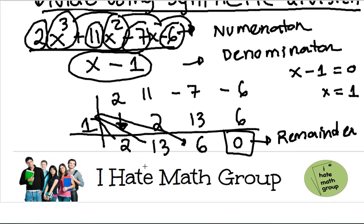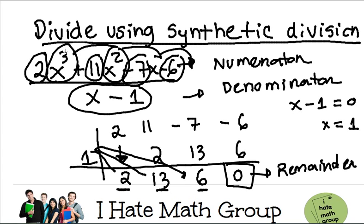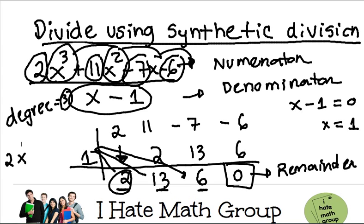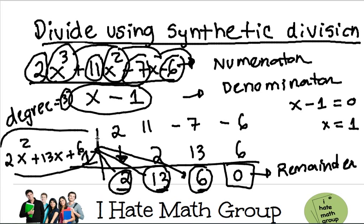My final answer is as follows. You can see that my coefficients are 2, 13, and 6. Don't forget, we started with a cubic function — the degree was 3. But any time you do synthetic division, you lower the degree of the expression. So now, instead of being a cube, it's going to be a quadratic. My final answer is 2x squared plus 13x plus 6. And that's how you do synthetic division.